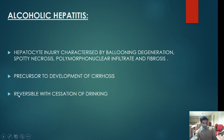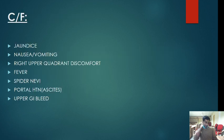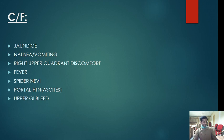Already, the patient develops jaundice and significant liver damage in alcoholic hepatitis, but it is reversible with immediate stoppage of alcohol. Clinical features: jaundice, nausea, vomiting, right upper quadrant discomfort, fever, spider nevi, and portal hypertension features like ascites and upper GI bleed.